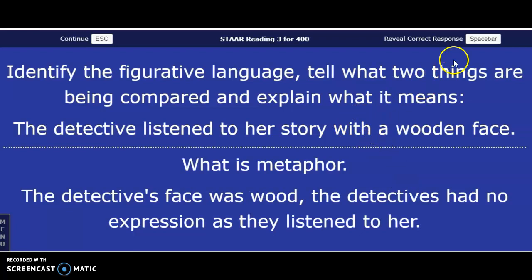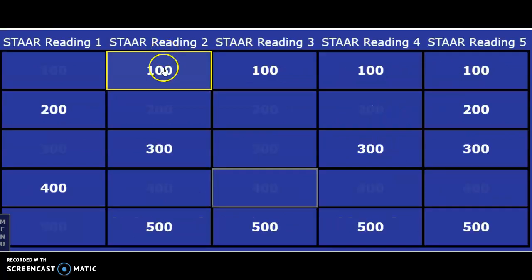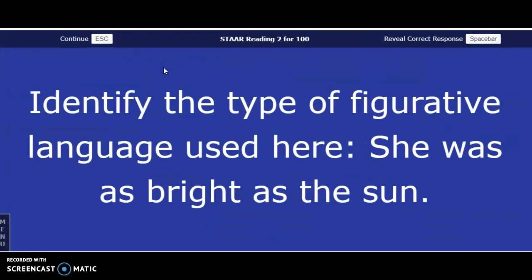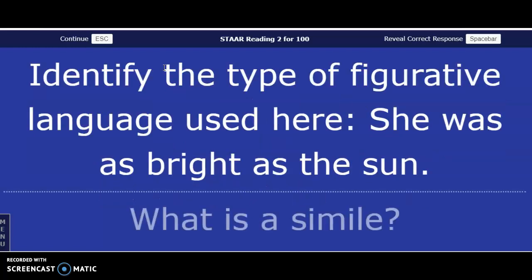Identify the type of figurative language used here: 'She was as bright as the sun.' The answer in three, two, one — that's a simile. Comparing two things using 'like' or 'as.'